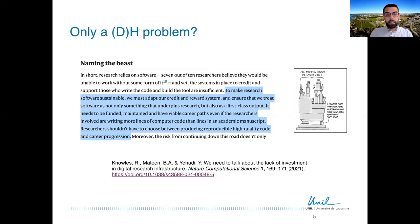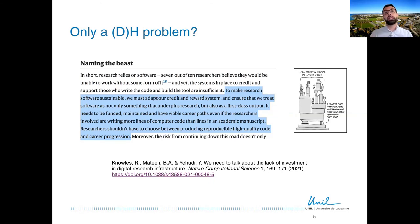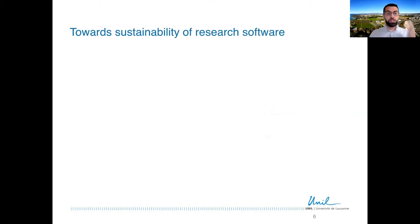We can come again to the issue of the lack of funding. Of course, it's not a problem exclusively in the humanities. There is a Nature article that appeared less than a week ago which does a very good job in analyzing the situation. I'm reading an excerpt: 'To make research software sustainable, we must adapt our credit and reward system and ensure that we treat software as not only something that underpins research, but also as a first class output. It needs to be funded, maintained, and have viable career paths, even if researchers involved are writing more lines of computer code than lines in an academic manuscript.' Some thoughts on what we could and should do to work towards more sustainable research software in the humanities.